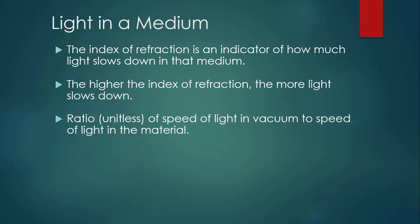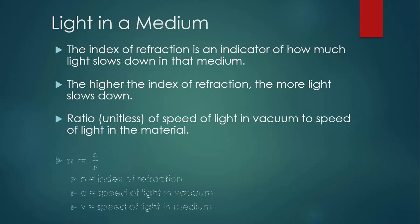The index of refraction is a ratio, which means it's unitless, of the speed of light in a vacuum to the speed of light in the material. Written as an equation, it looks like this. N, the index of refraction, equals C over V.